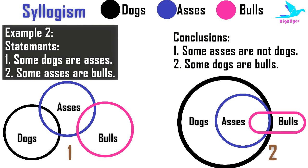Either some part of the circle representing asses gets merged with the circle representing dogs, or the entire circle representing asses can get merged within the circle of dogs. For statement 2, 'Some asses are bulls,' two situations are also possible: some part of the asses circle merges with bulls, or some part within the dogs circle merges with bulls. Considering figure 2, some dogs by default are also getting converted into bulls, but in figure 1, dogs are not included in the circle of bulls.